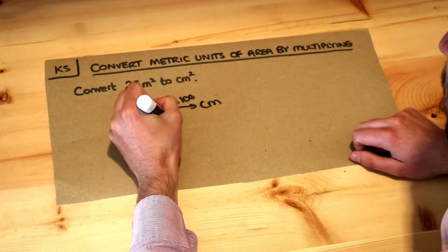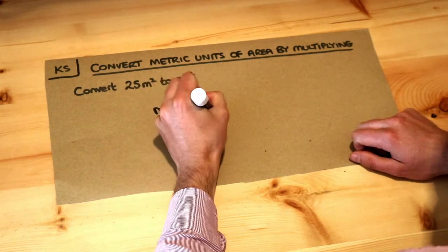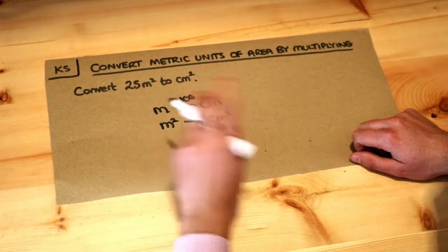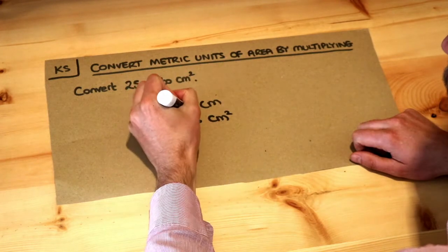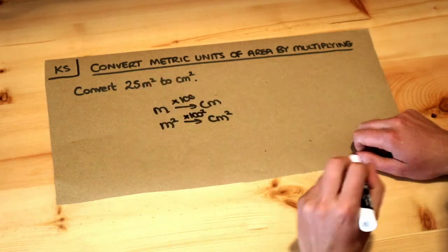Now if we're going from metres squared to centimetres squared, then we actually times not by 100 but by 100 squared. And the reason it works is this.